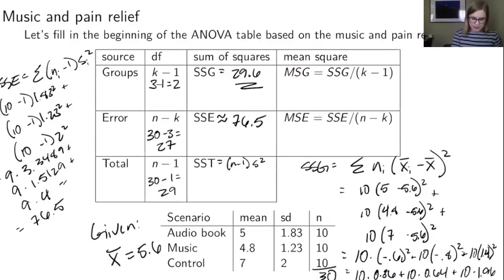And then the last thing that I can do is I can just say I know that the SSG plus the SSE is equal to the SST. And so I can just add together 29.6 plus 76.5 and that's going to be my approximate SST. That's the 106.1.